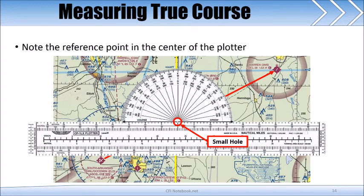Note that in the center of your plotter there is a small hole. The hole is a reference point and we are going to place it over the intersection of the route and a line of longitude. Any line of longitude will work, but since we have already got one going through the center of our course, that will be the easiest.